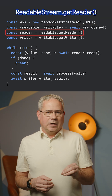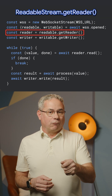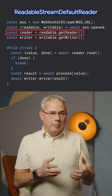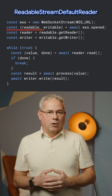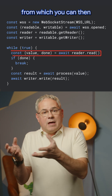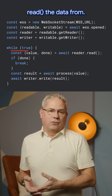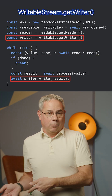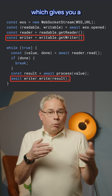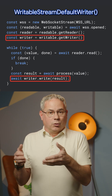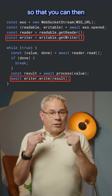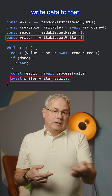By calling readableStream.getReader, you get a ReadableStreamDefaultReader, from which you can then read the data. To write data, call writableStream.getWriter, which gives you a WritableStreamDefaultWriter, so that you can then write data to it.